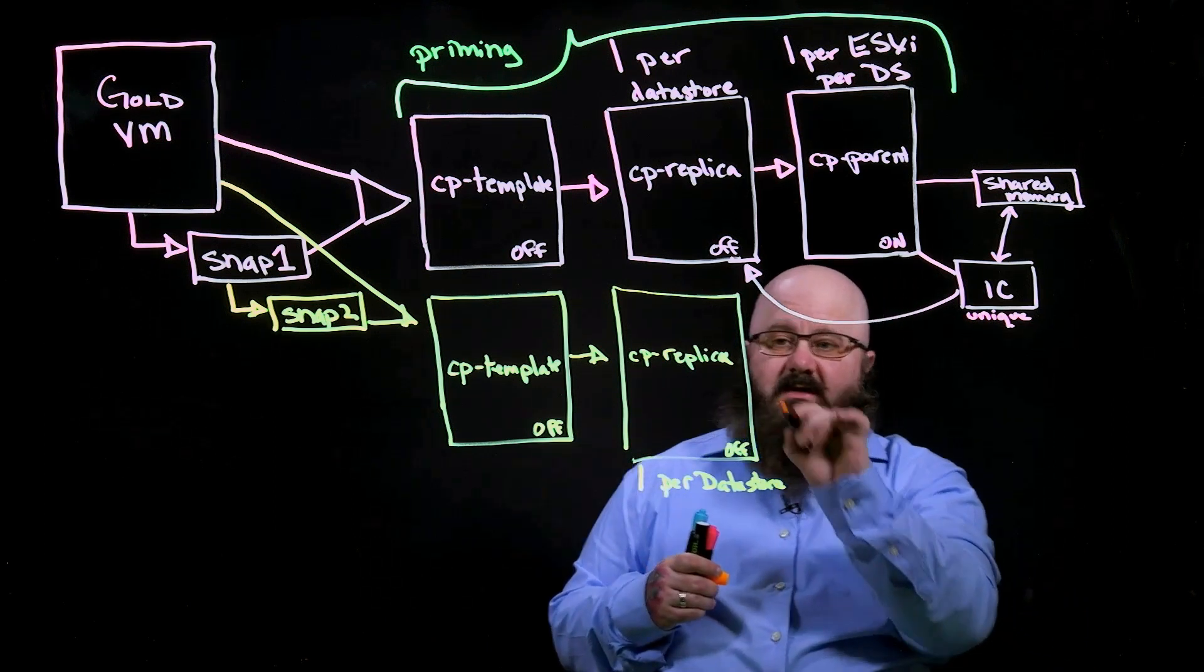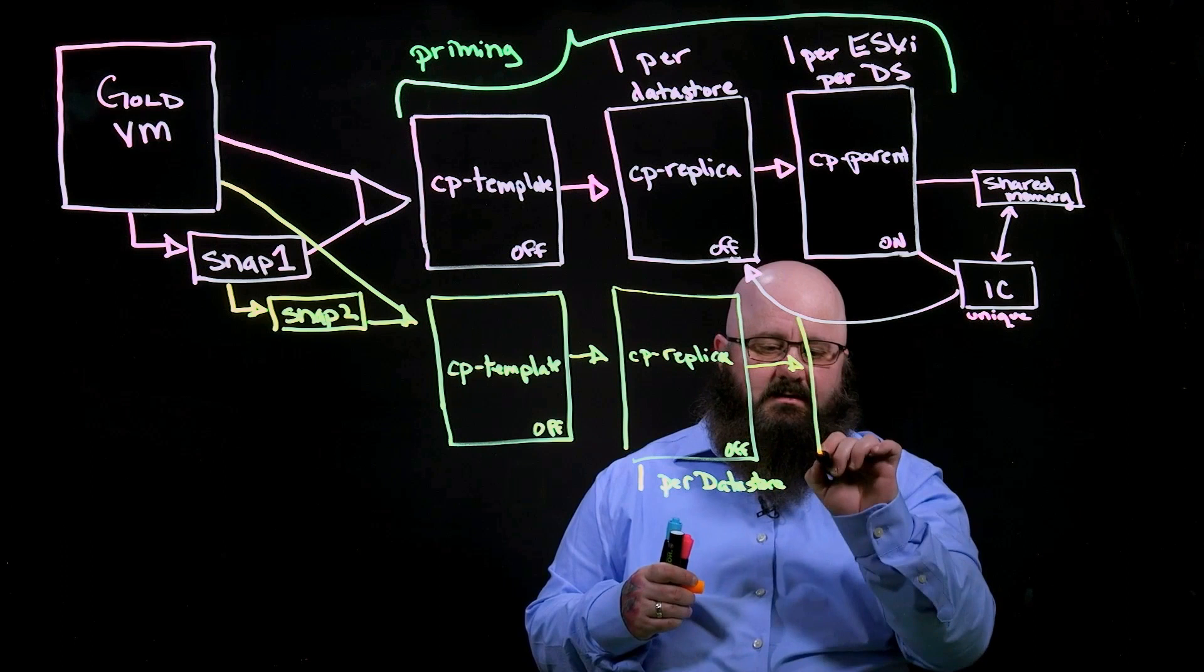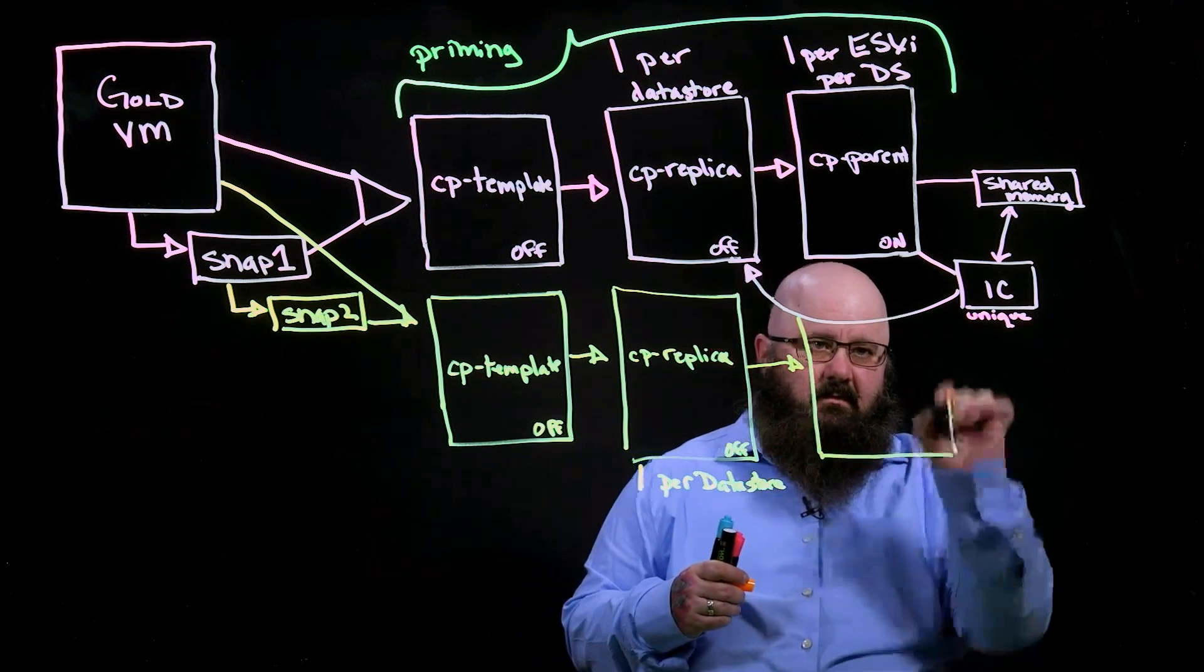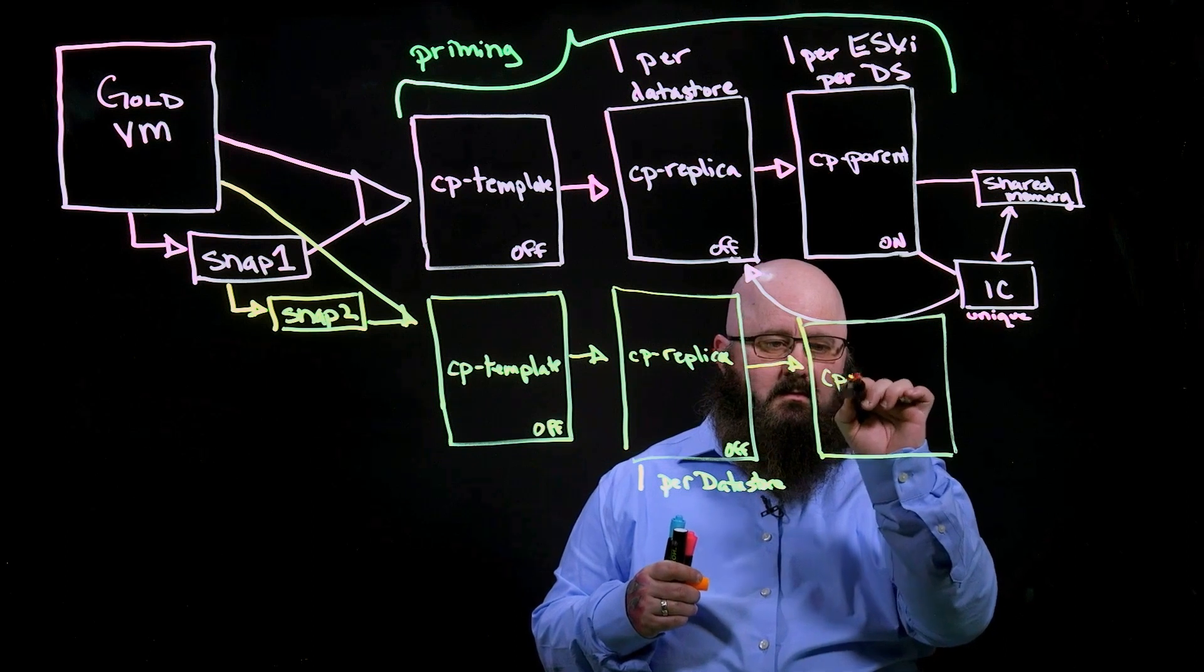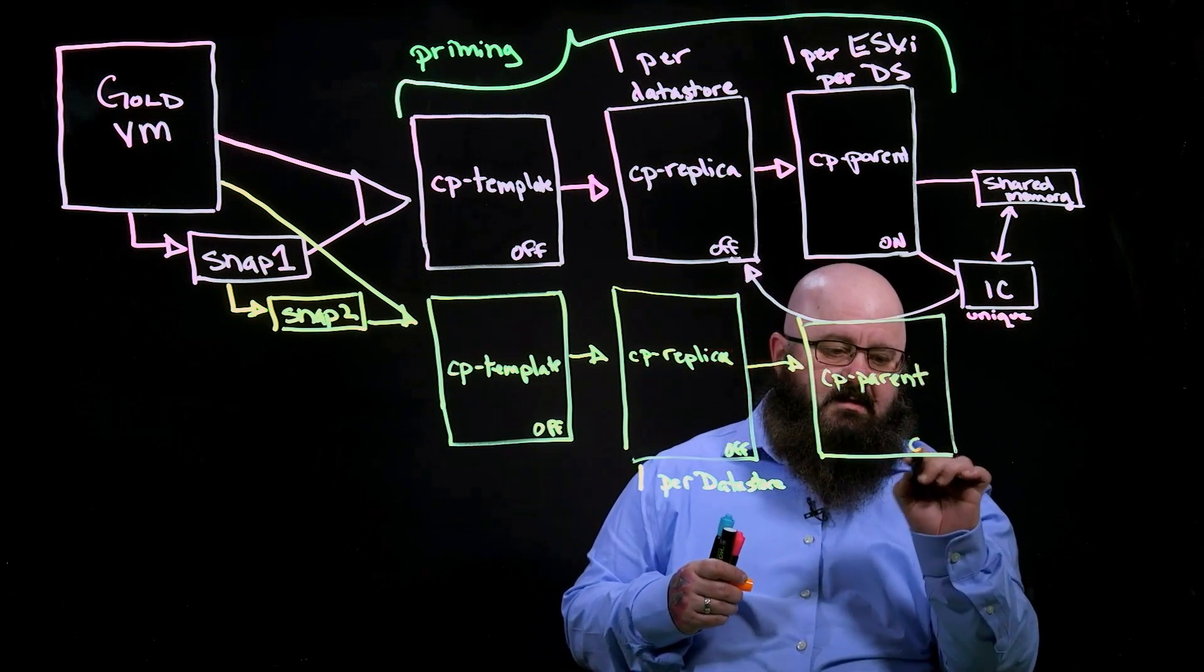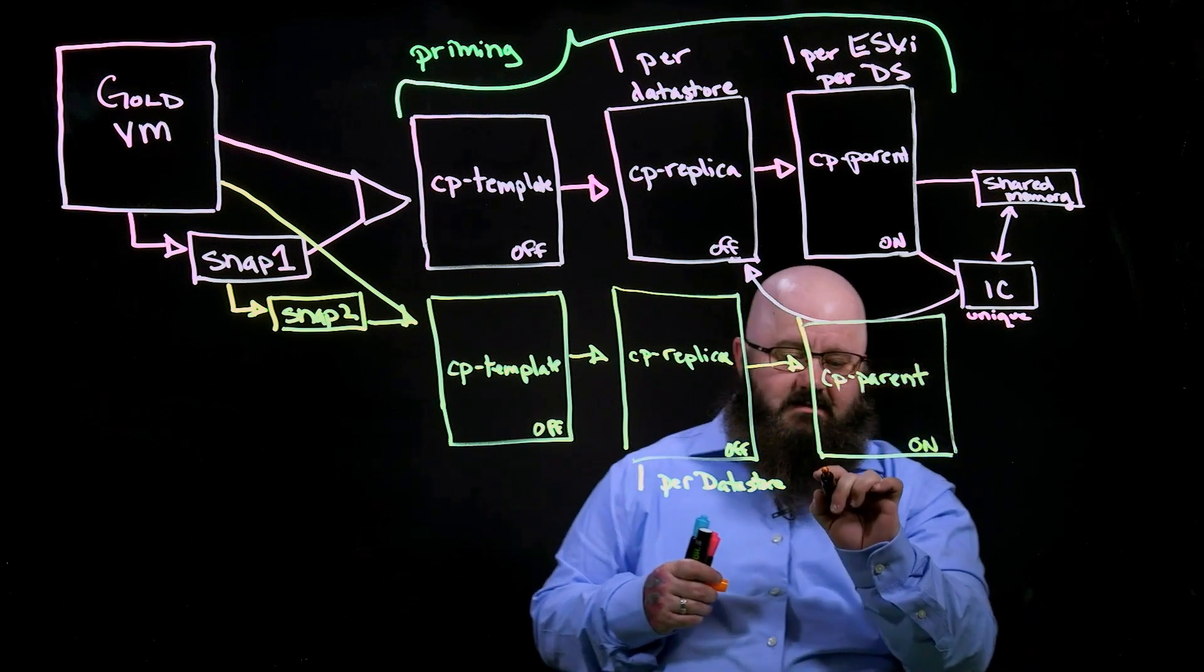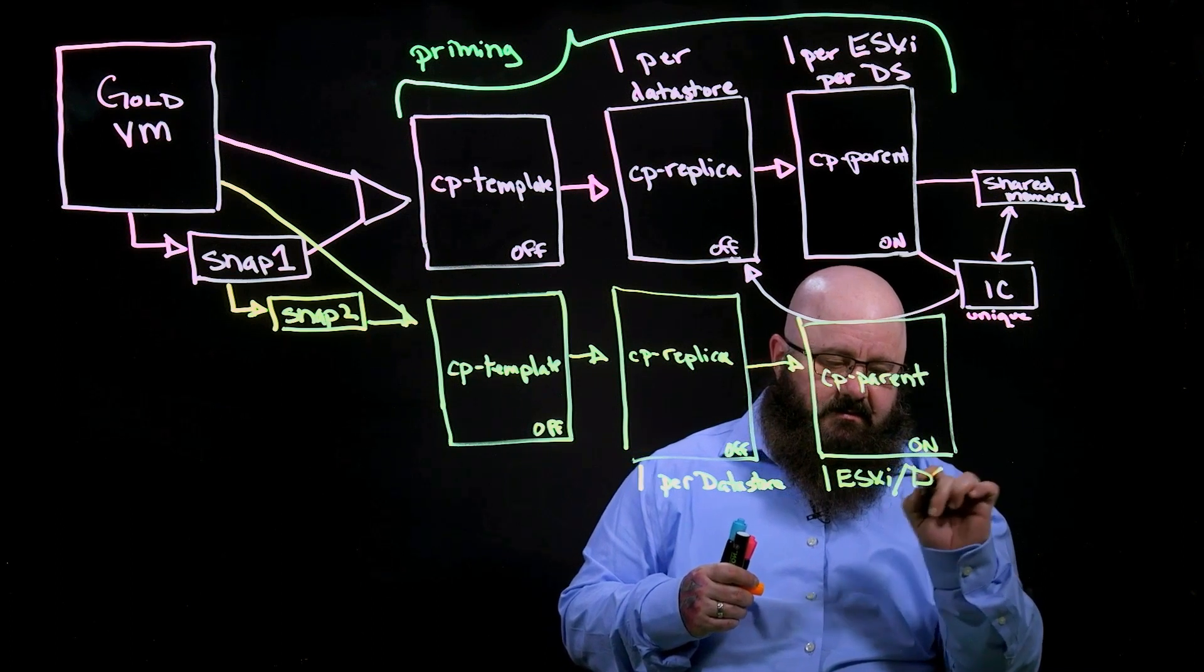Once our replica is created, we'll go ahead and create our parent. And this one is on. And this one, remember, it's one per ESXi host per data store.